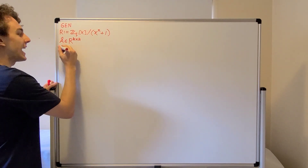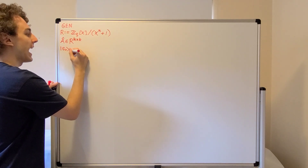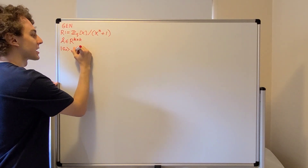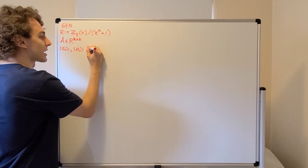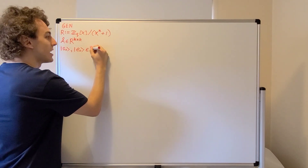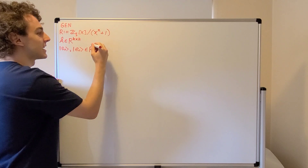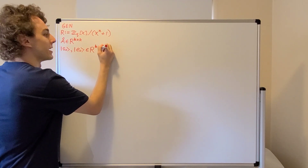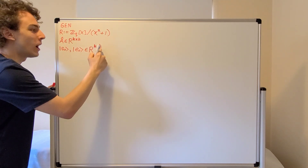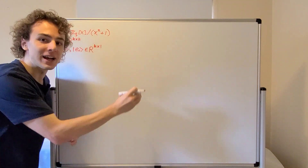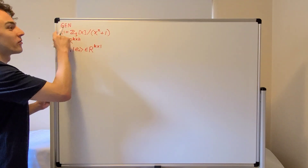We also need to generate a secret column vector S0, and we also need an error column vector E0. Both of these column vectors have entries that are elements of the ring, and the dimension of these matrices is k by 1. So k by 1 means we're dealing with a column vector with k entries, and all of those entries are elements of this ring.